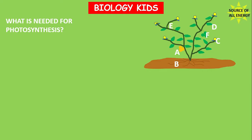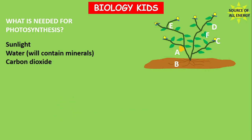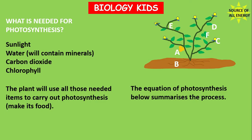Now let's look a little deeper into photosynthesis. What is really needed for photosynthesis — are those the only things? No, let's look at what else needs to be added to the list: sunlight, water, carbon dioxide, and did you know plants also use chlorophyll to trap the light energy from the sun? The plant will use those needed items to carry out photosynthesis, which is simply to make its own food.